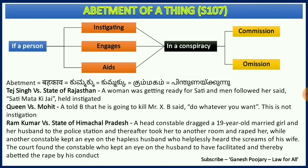The third case law is Ramkumar versus State of Himachal Pradesh. A head constable dragged a 19-year-old married woman and her husband to the police station, took her to another room and raped her, while another constable kept an eye on the helpless husband. The court found that the constable who kept watch facilitated and thereby abetted the rape. The first committed the rape; the second aided by keeping an eye on the husband — both are part of the offense.